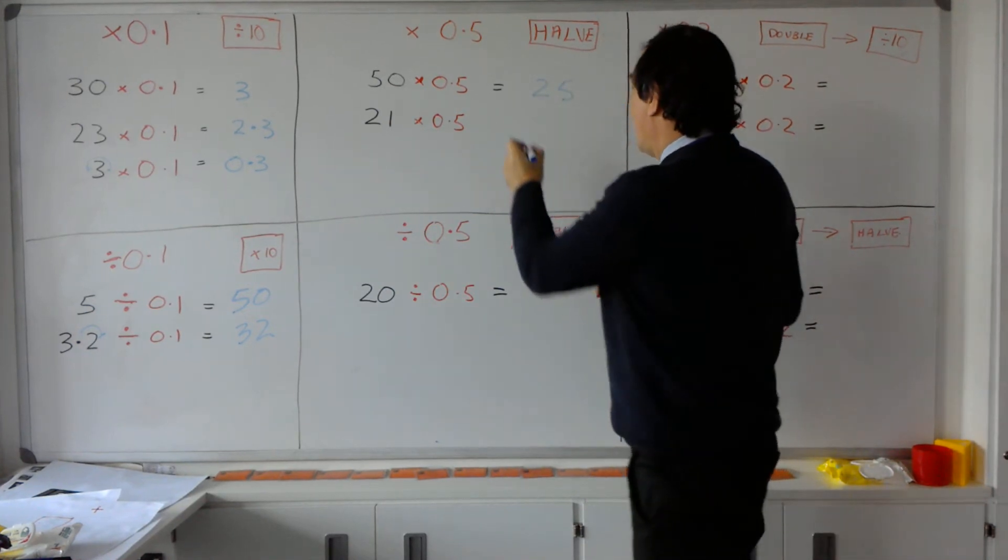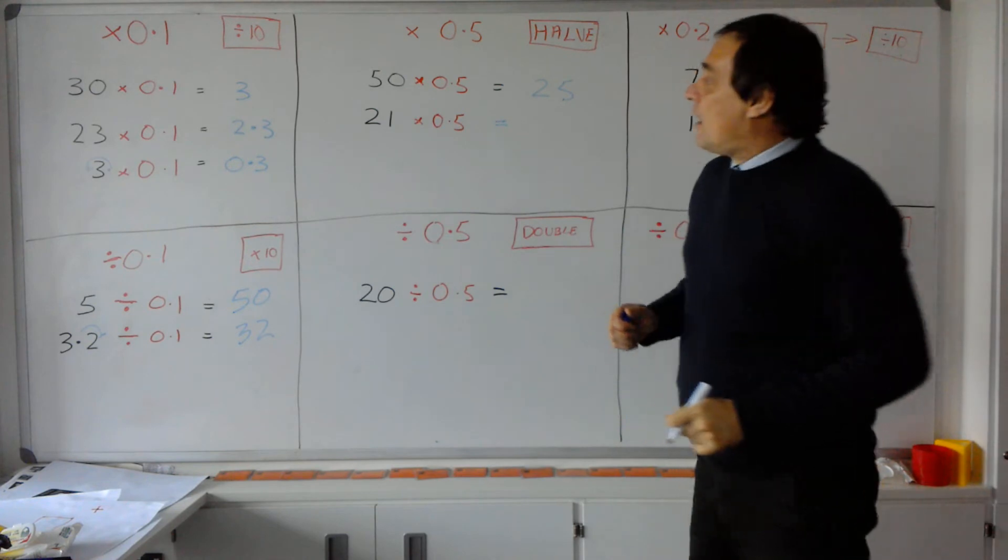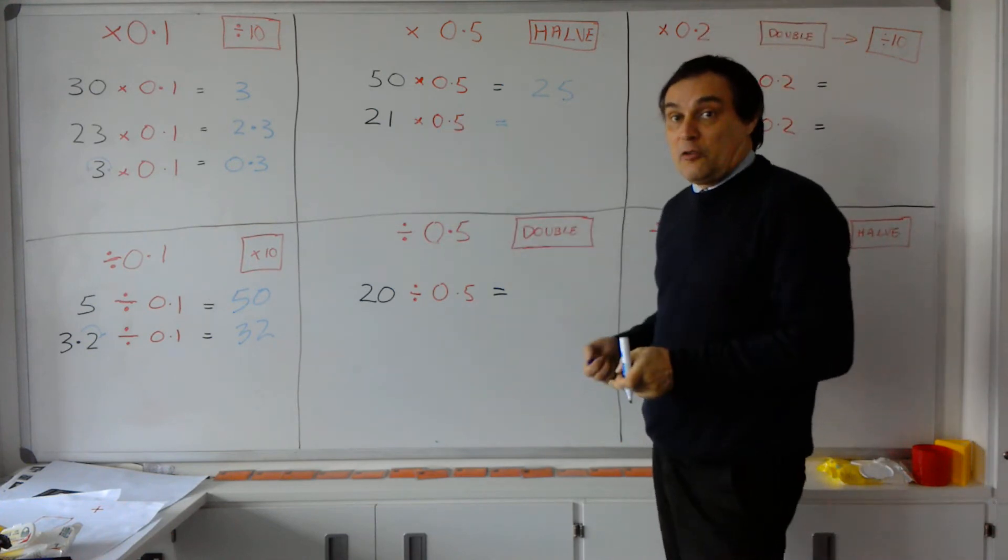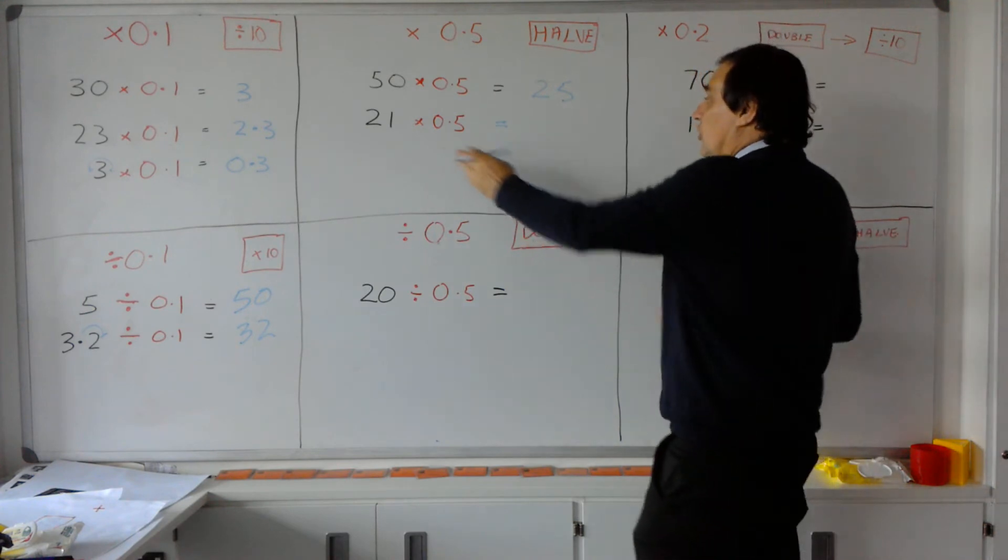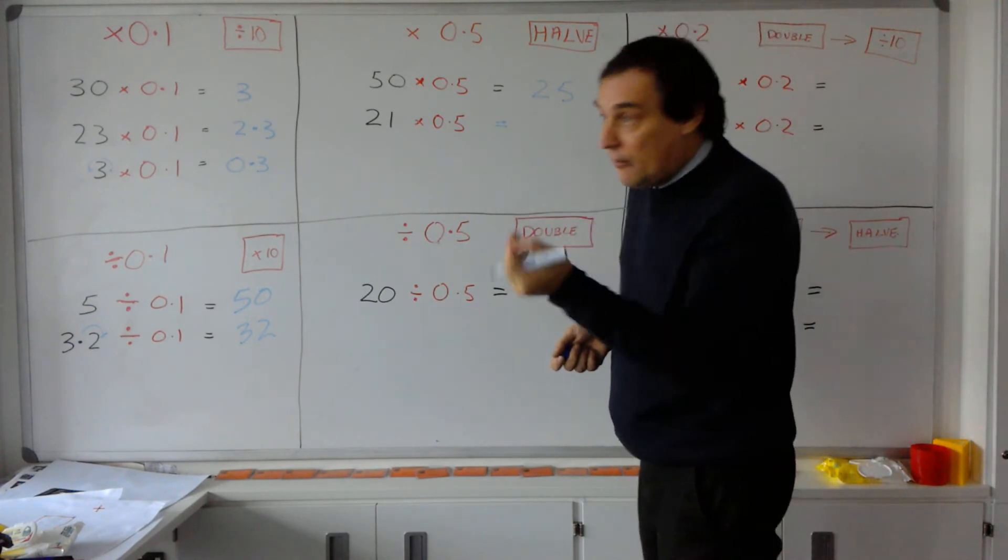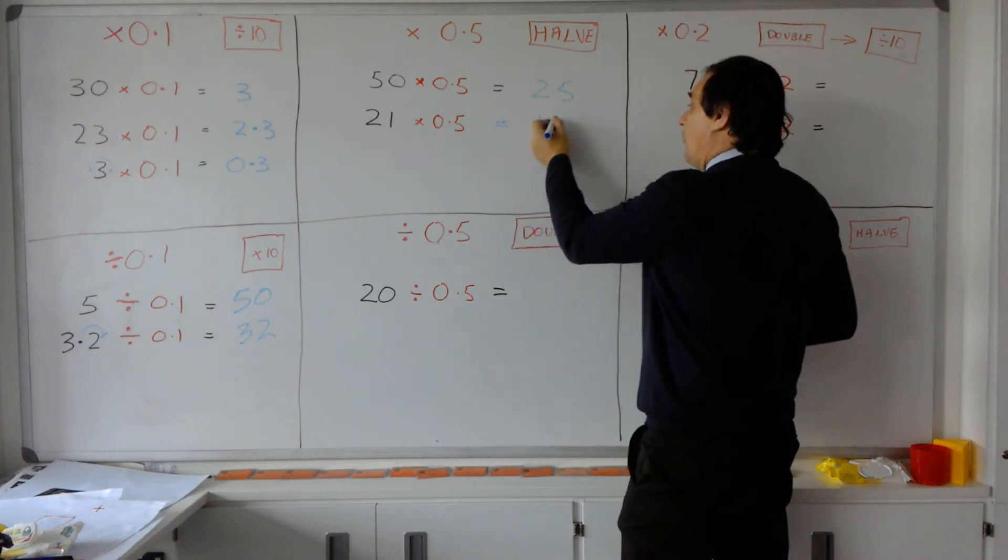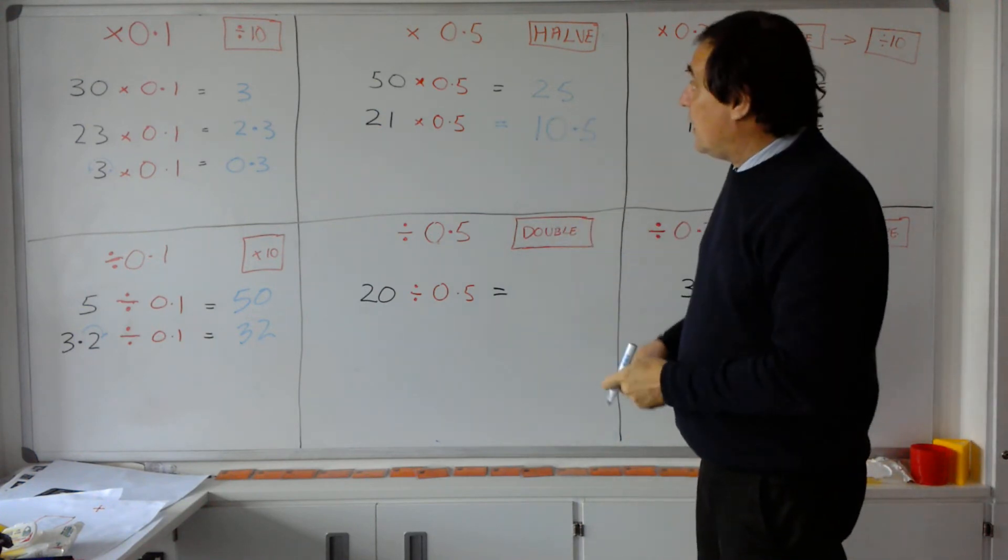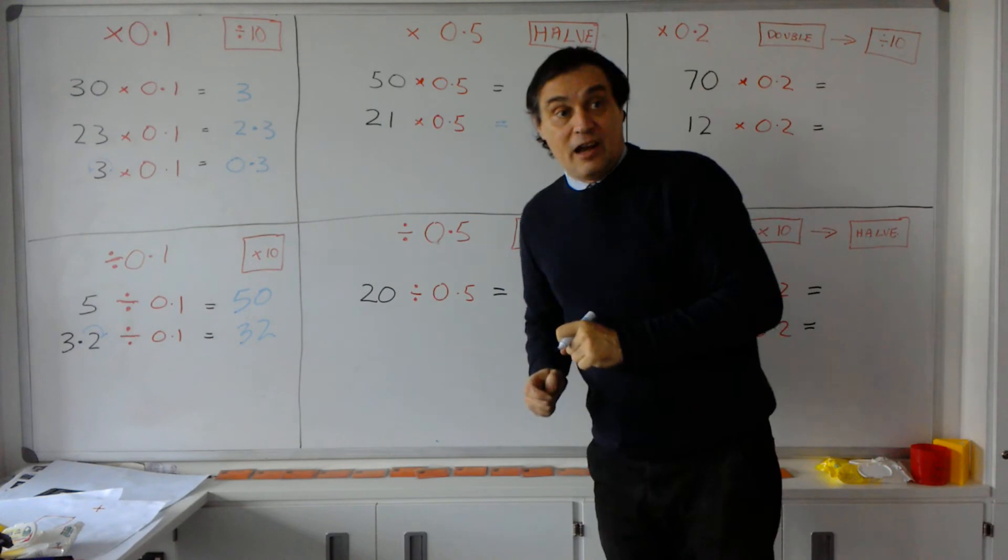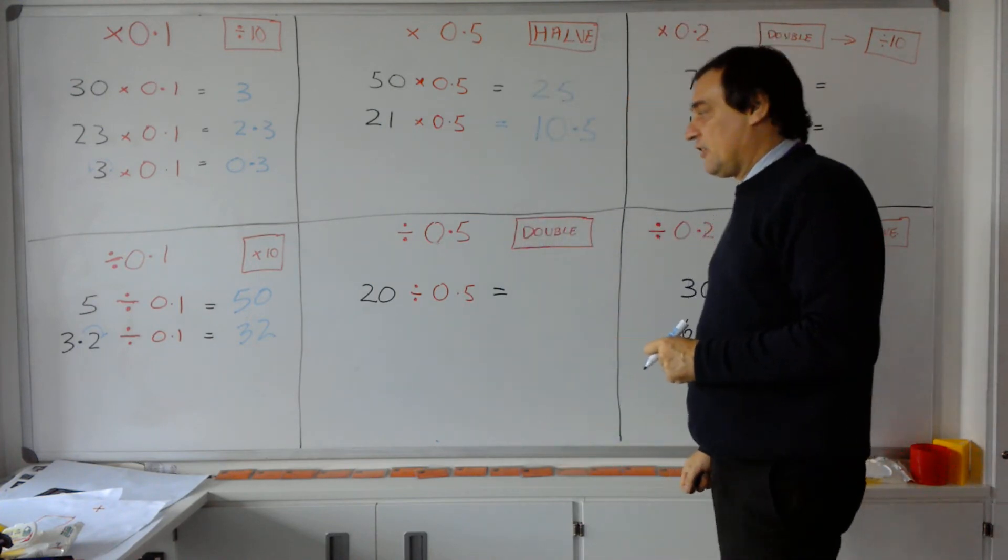So 50 times 0.5 means half of 50. Half of 50 is 25. Whole number there. Okay, if I've got an odd number and I'm halving an odd number, remember we're going to have a 0.5 in the answer. So 21 times 0.5, half of 21 is 10 and a half or 10.5. So recapping, multiplying by 0.5 is exactly the same thing as halving a number.